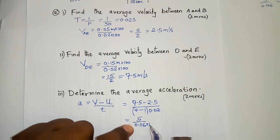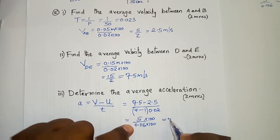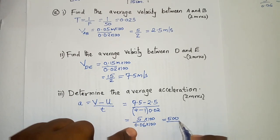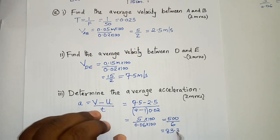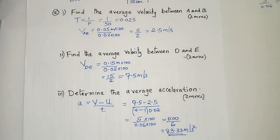Multiplying numerator and denominator by 100 to remove the decimal gives 500 divided by 6, which equals 83.33 meters per second squared. That is the average acceleration. So that is how you use the ticker timer to find velocity and acceleration. Thank you very much and welcome.